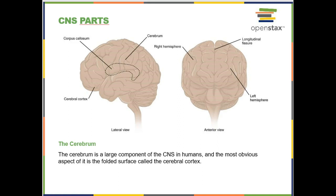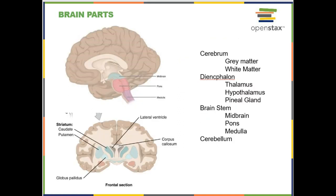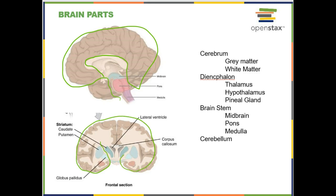First we want to know what the cerebrum is versus the rest of the brain. I'm not sure if the corpus callosum is considered part of the cerebrum or not — there may be some debate — but checking a couple of sources, it seems like everything highlighted, including the multicolored areas, are all considered part of the cerebrum.